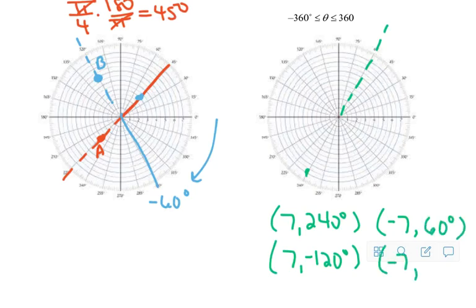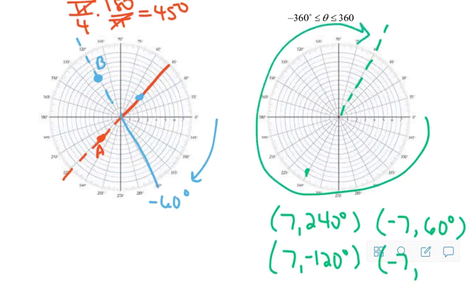What angle would that be if I went in the negative direction? Well, it would be at negative 300. So, that's four different ways of plotting the same dot, which is at 7, 240 degrees.